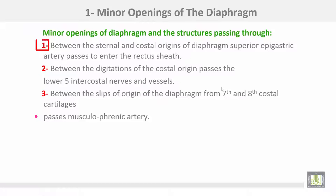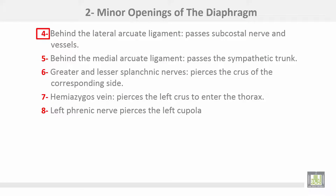The minor openings of the diaphragm: number one, between the sternal and costal origins, the superior epigastric artery passes to enter the rectus sheath. Number two, between digitations of the costal origin, the lower five intercostal nerves and vessels pass. Number three, between the slips of origin from the seventh to eighth costal cartilages, the musculophrenic artery passes. Number four, behind the lateral arcuate ligament, the subcostal nerve and vessels pass.